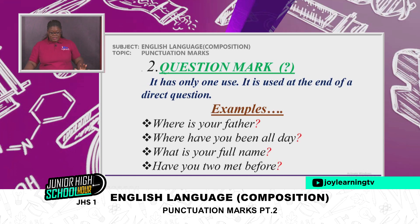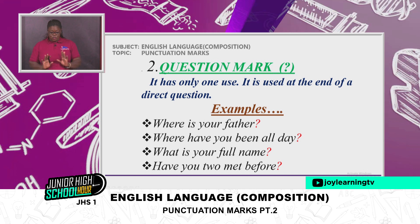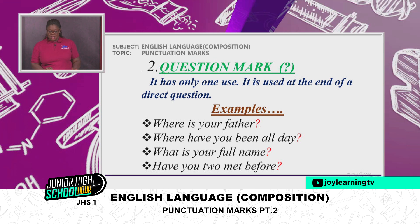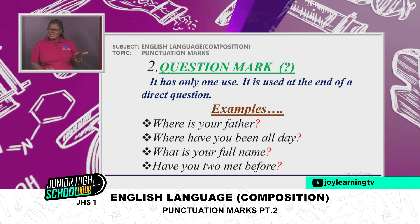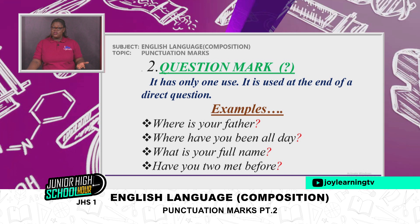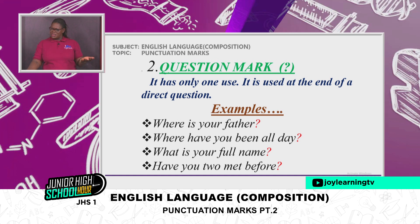Then we moved on to the question mark. It has only one use: it is used at the end of a direct question. Examples: 'Where is your father?' 'Where have you been all day?' 'What is your full name?' 'Have you two met before?' You can see the question mark at the end of each sentence in red ink. I want you to give me two or three examples of your own.